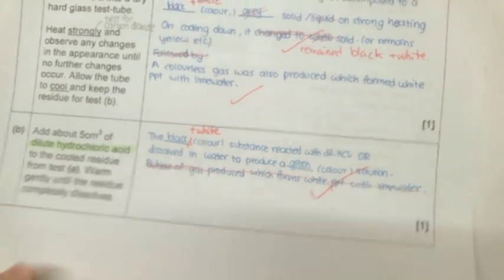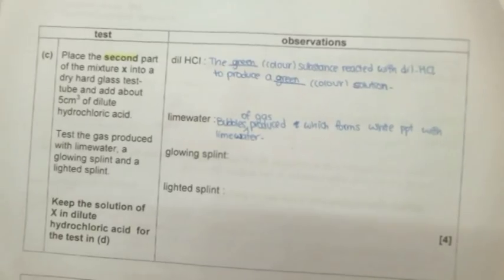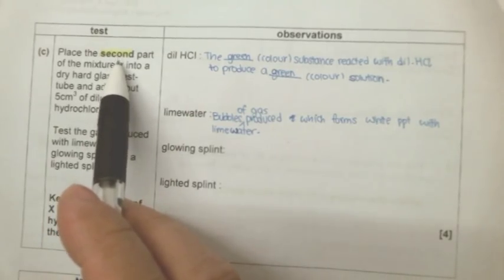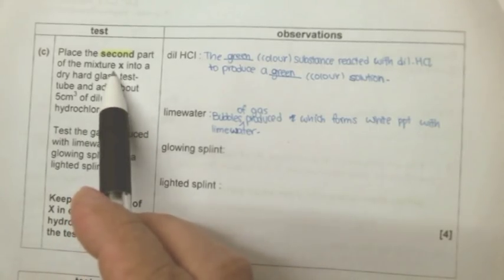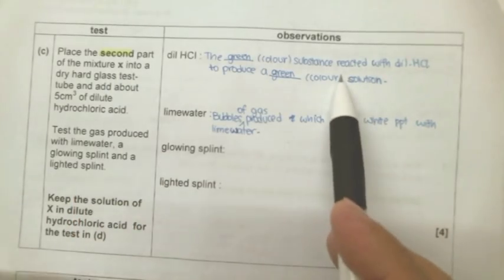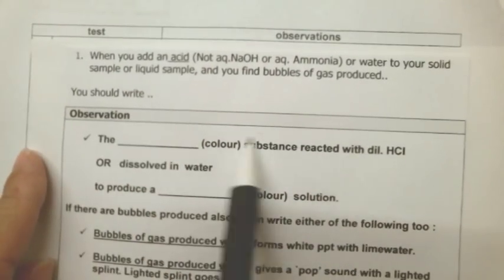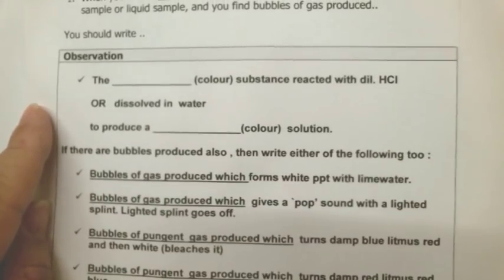Let's turn to the next page now. In this second part of the experiment, we are supposed to add acid into the new set of mixture X in a test tube. And because we added in acid to a solid, we should follow the way we should write again from the template.